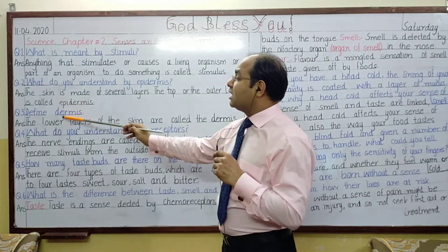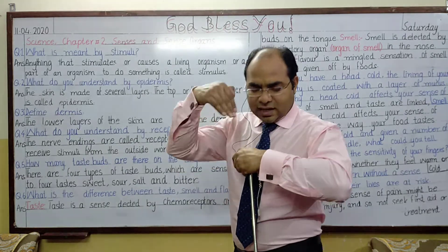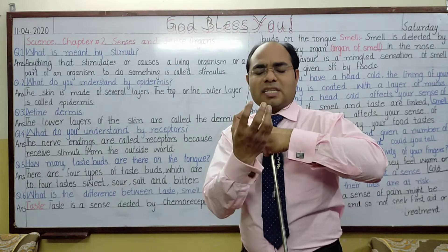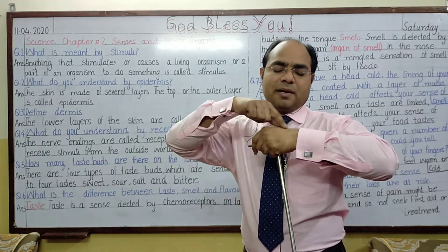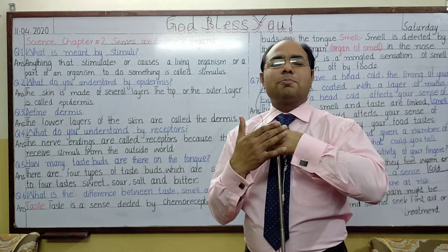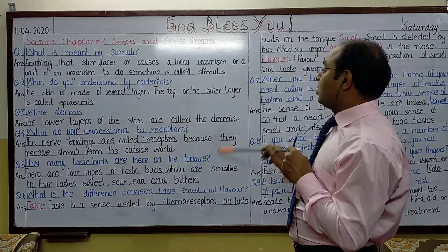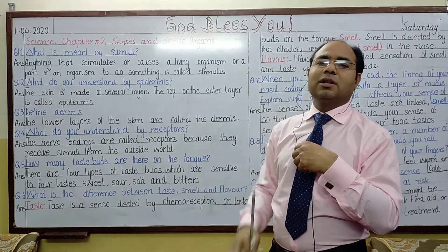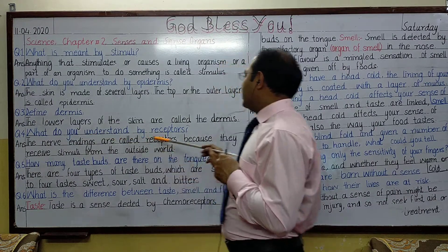Question number 3: define dermis. Inside our skin, underneath the skin, there are nerves receiving messages, and the ends of those nerves are called nerve endings. They are connected underneath the skin. The lower layers of the skin are called dermis — meaning the skin has layers underneath as well, and those layers are known as dermis.